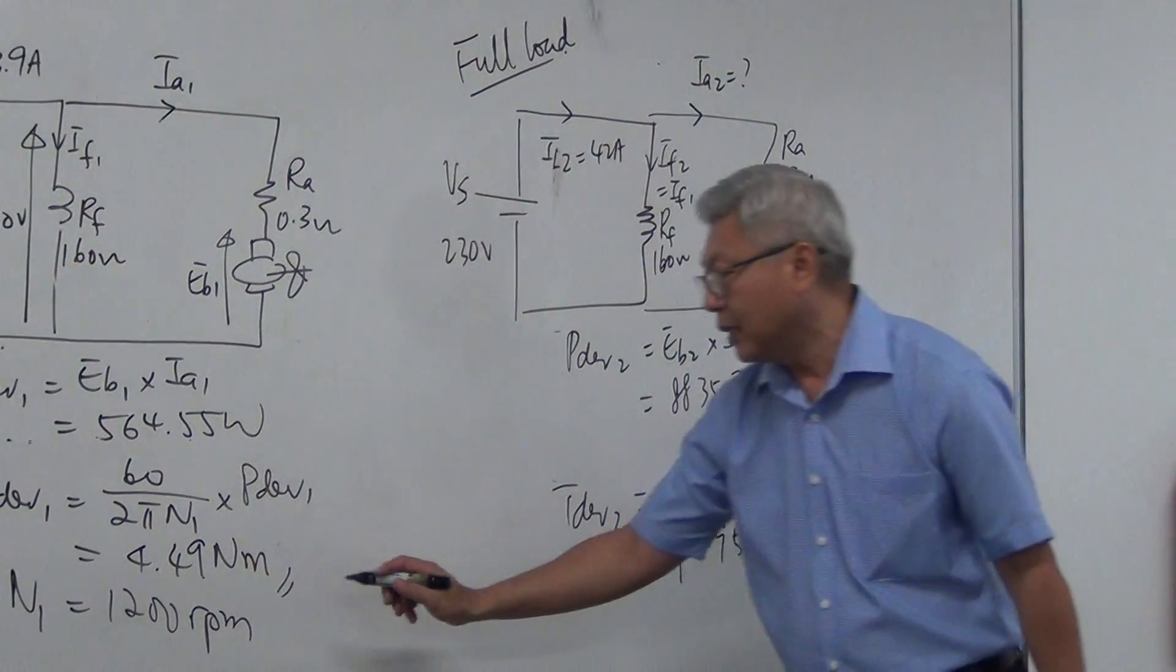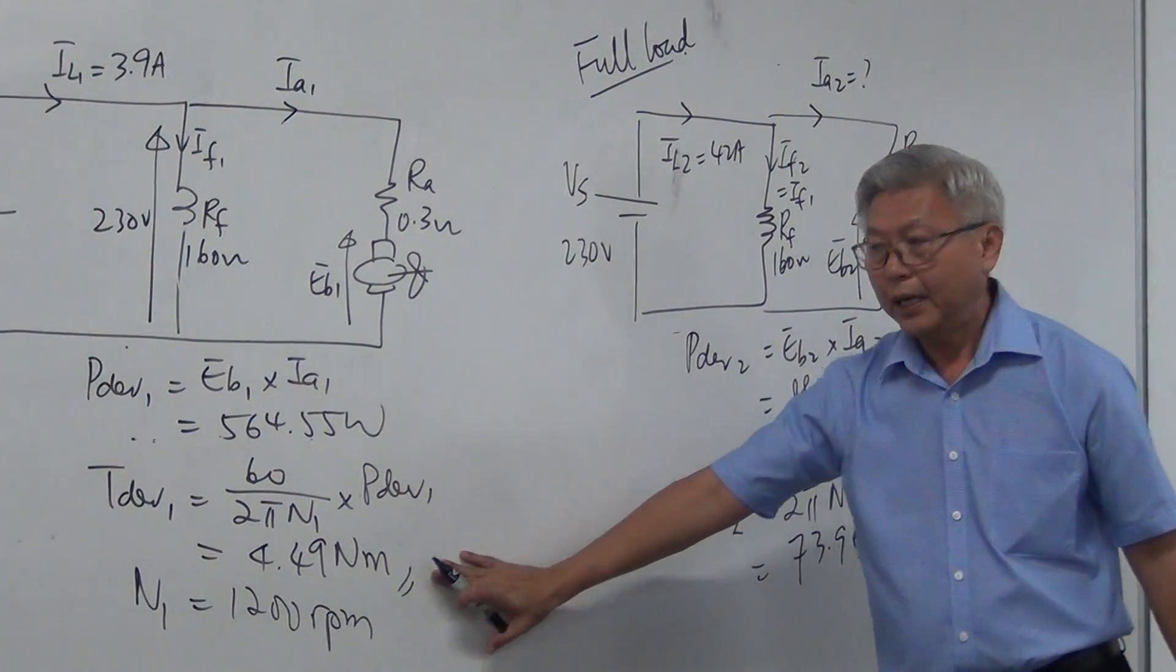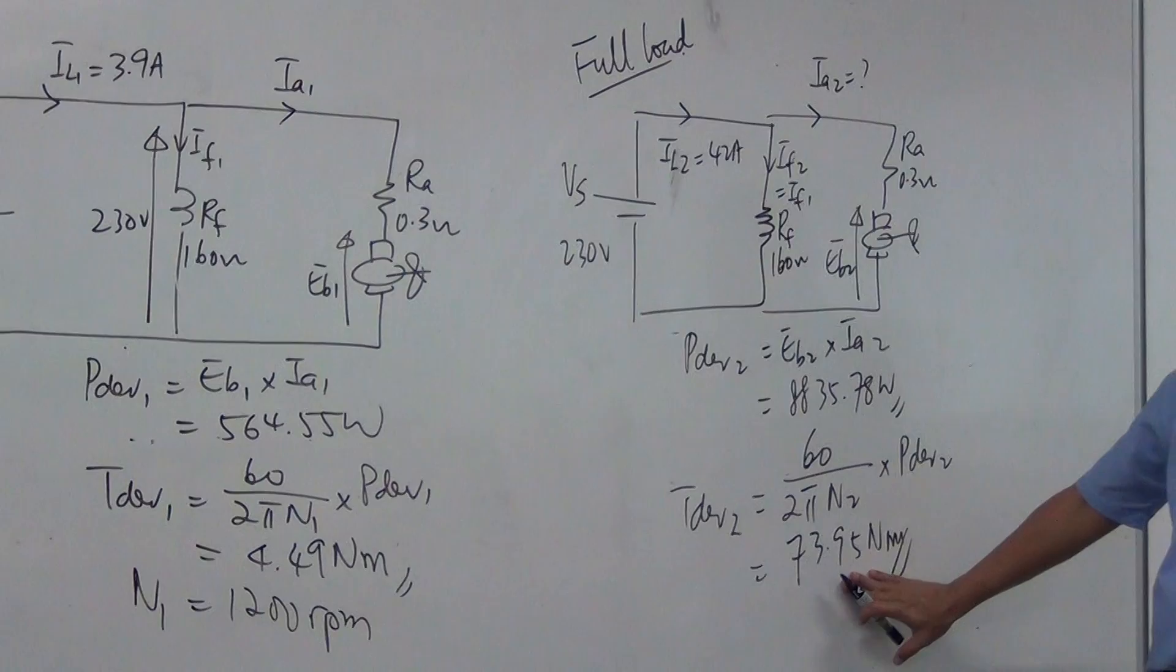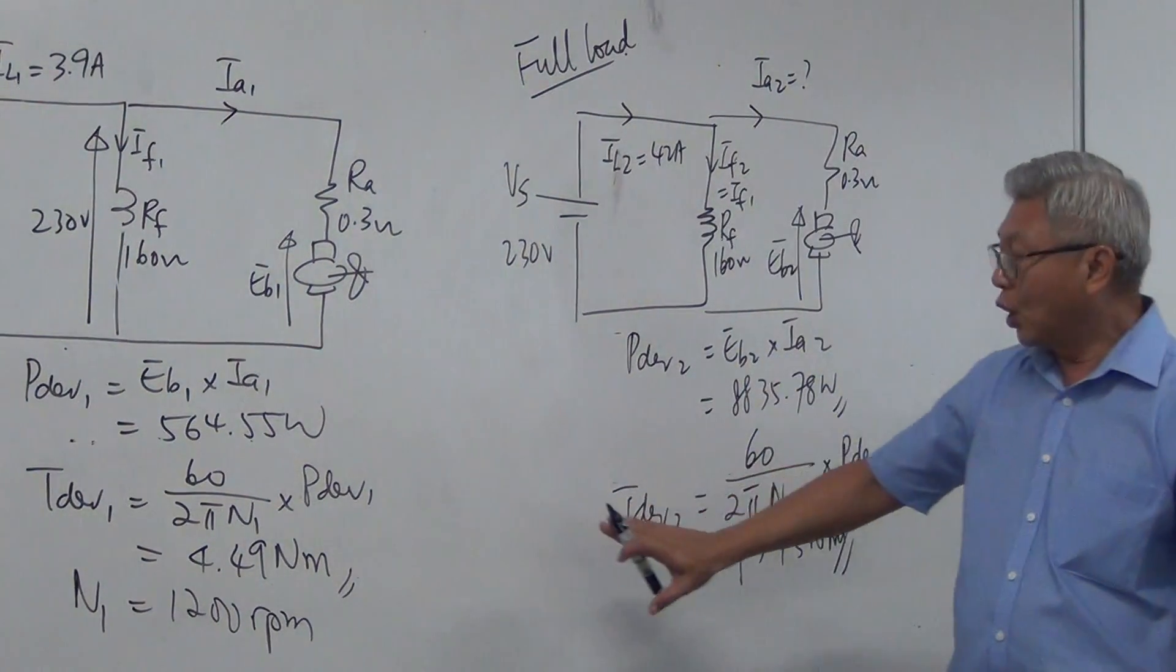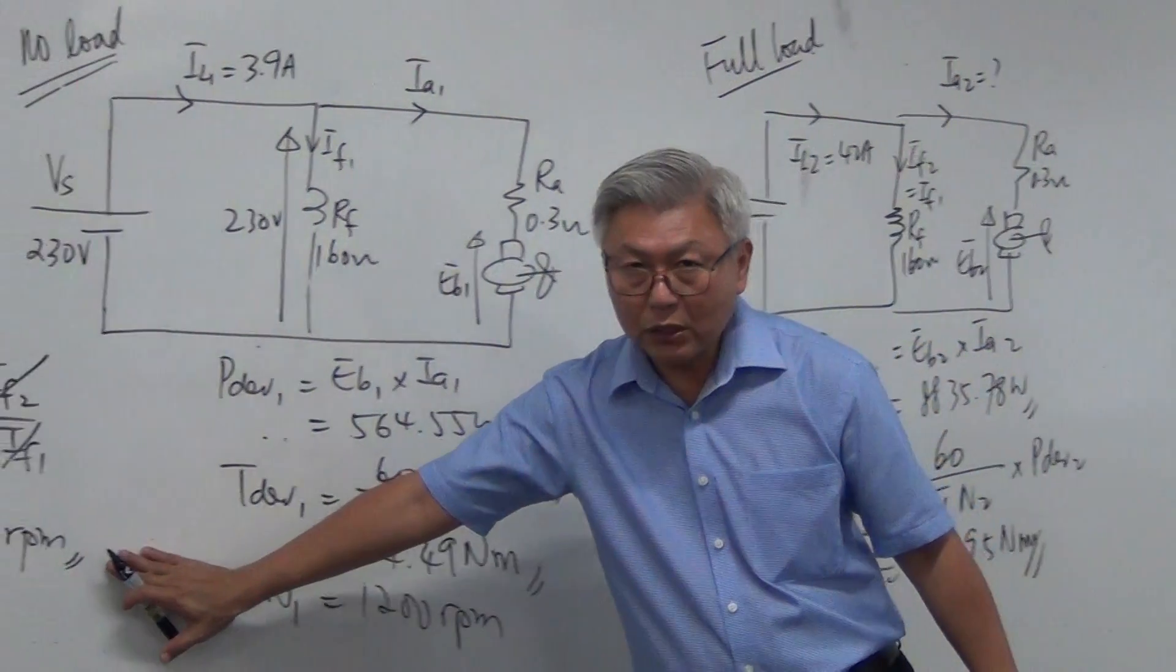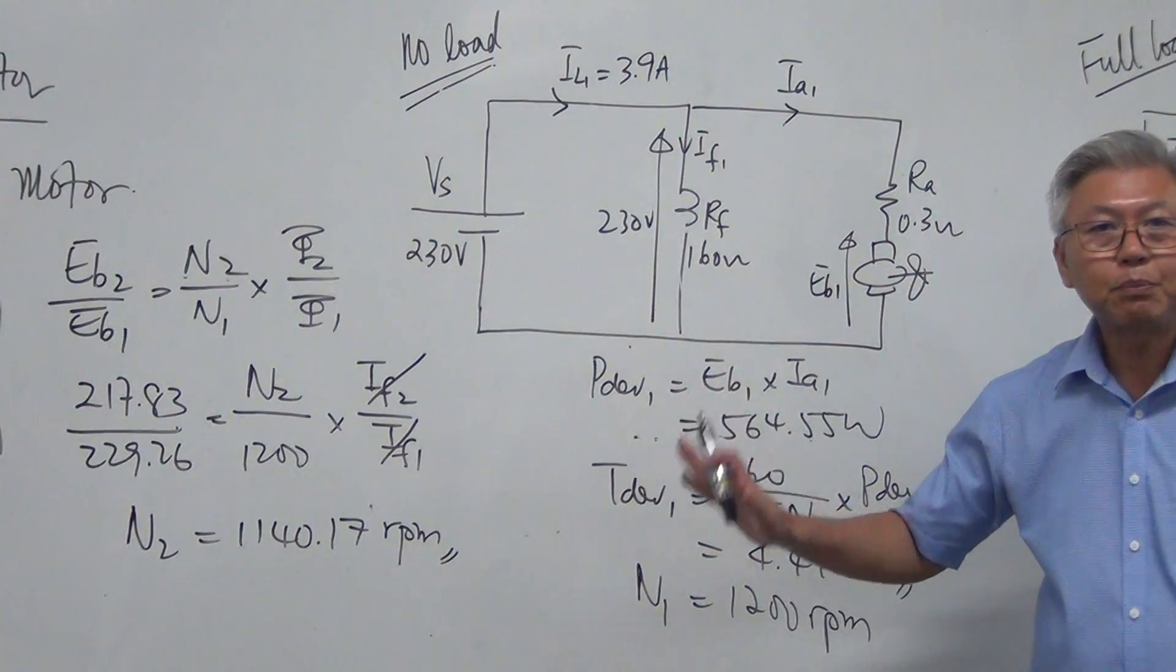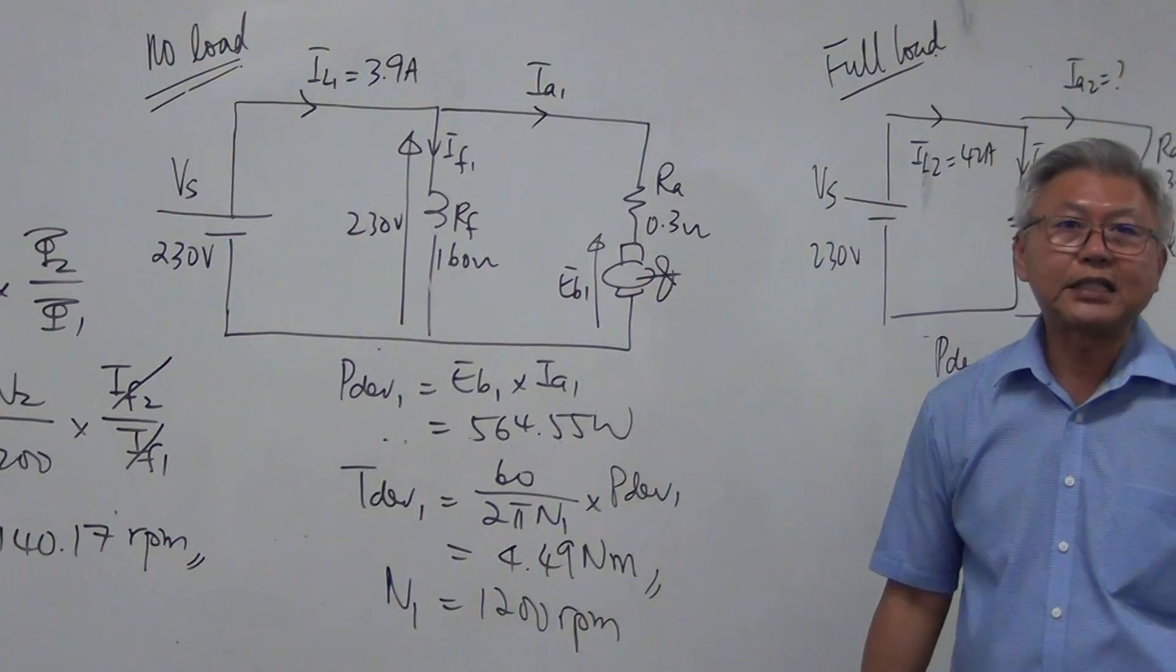So can you see that at no load, the torque is 4.49. At full load, the torque is 73. But in terms of speed, at no load, the speed is 1200. And at full load, the speed calculated is 1140. So even though there is a lot of change in the torque, but the speed remains rather constant. And that is the characteristic of the DC shunt motor.